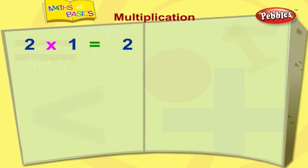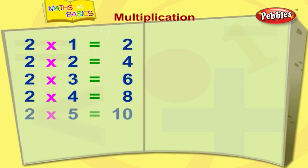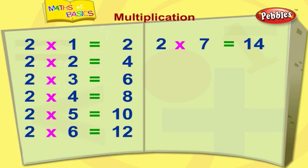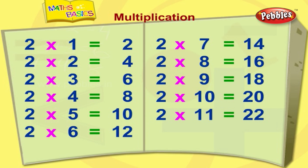Two ones are two. Two twos are four. Two threes are six. Two fours are eight. Two fives are ten. Two sixes are twelve. Two sevens are fourteen. Two eights are sixteen. Two nines are eighteen. Two tens are twenty. Two elevens are twenty-two. Two twelves are twenty-four.